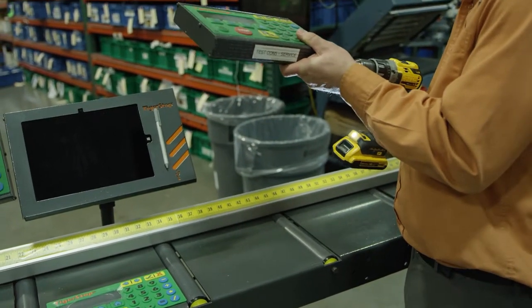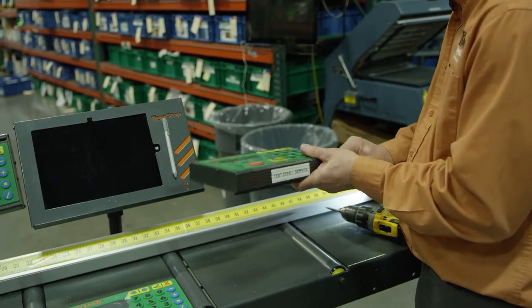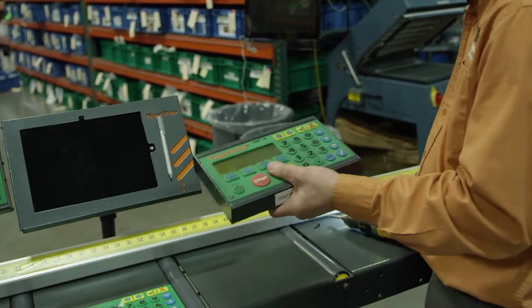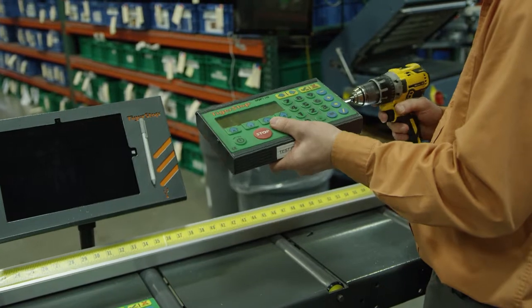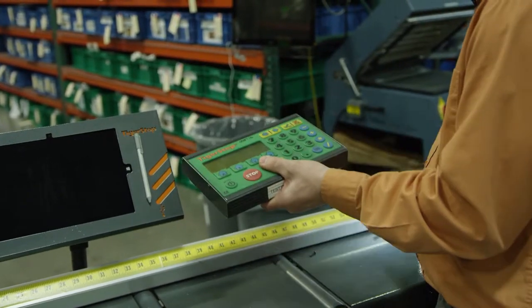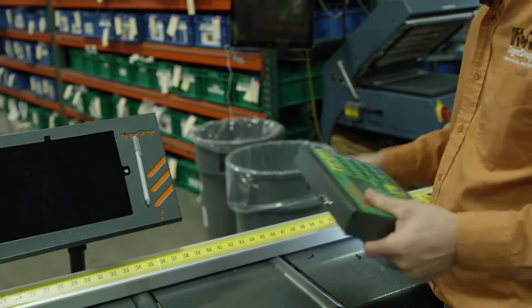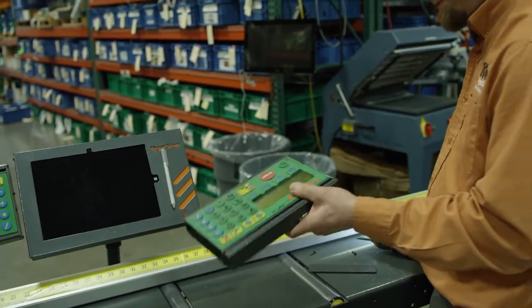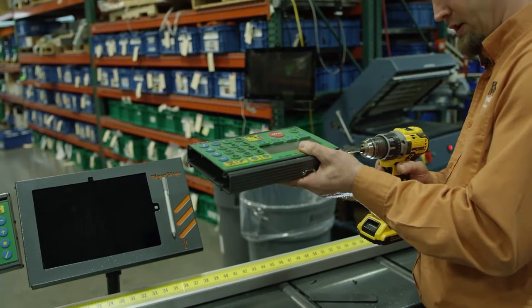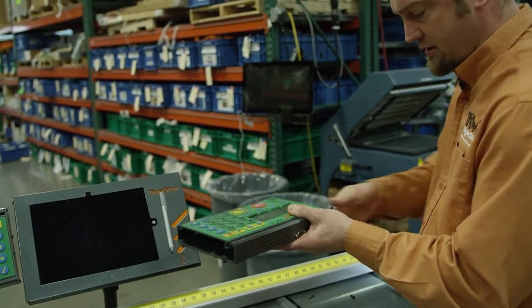We're going to go ahead and pull the screws off the end here. Now there's normally four on here but we've got two on this one as this is an older beaten-on controller.